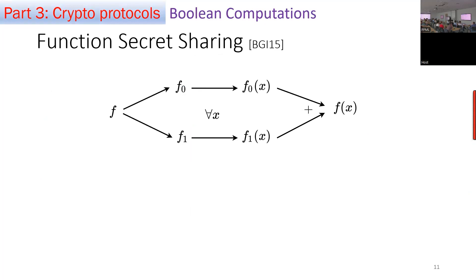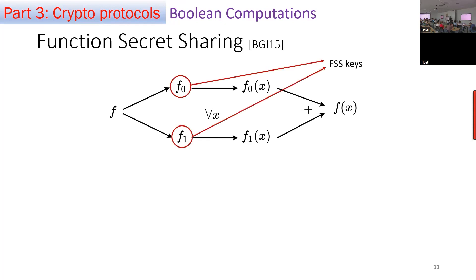Function secret sharing, introduced by Boyle, Gilboa, and Ishai in 2015, takes a function f and splits it into two components f0 and f1, such that locally both parties can evaluate f on any input x. P0 computes f0 of x, P1 computes f1 of x, and magically what they have are secret shares of the function output. f0 and f1 are known as the FSS keys. Correctness means f0(x) + f1(x) — where plus is XOR or addition in a larger ring — equals f(x), and we required that the key f_sigma hides it.